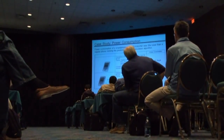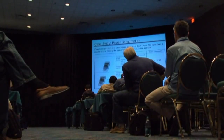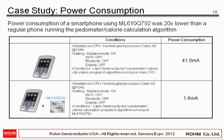In a case study, a phone using a Hummingbird Cortex-A8 processor running at 1 GHz was running a pedometer application consuming 41 milliamps on the processor. The same app running on the SensorHub microcontroller brought power consumption down to 1.6 milliamps — under identical conditions with display off and Wi-Fi off.